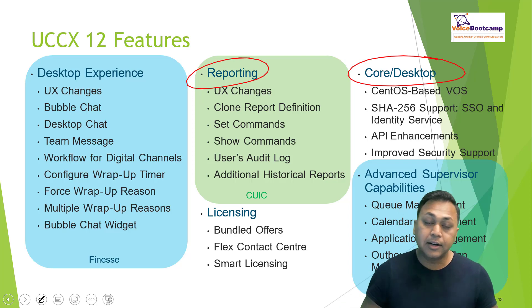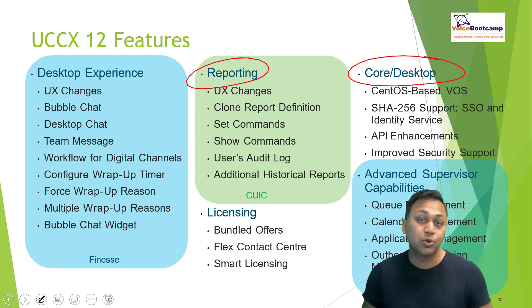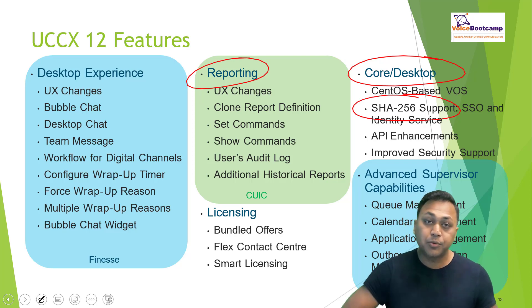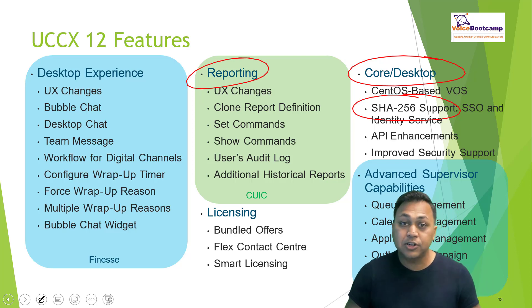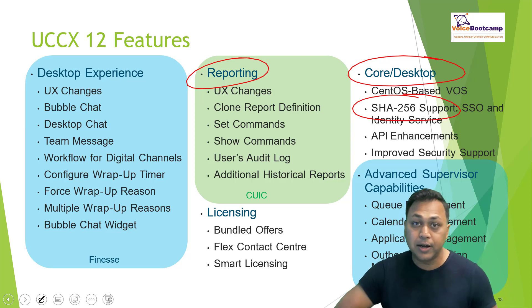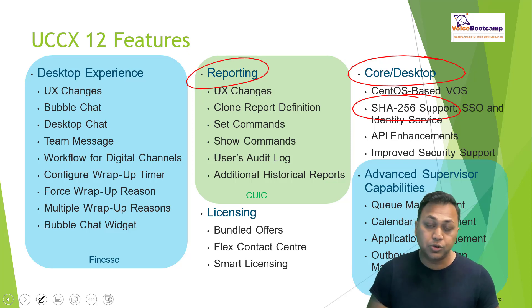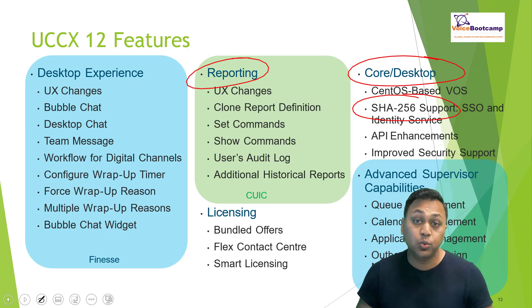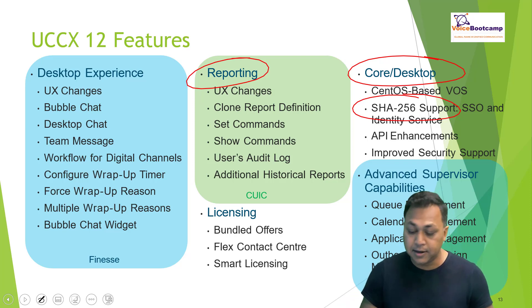The core operating system it runs on is CentOS, customized by Cisco, so you must use Cisco images to deploy it. It is highly secured with SHA-256 support, and it can provide single sign-on authentication using Microsoft Active Directory, Azure, and other options or SAML-compatible LDAP servers. It also offers extensive API access so developers can communicate with UCCX to push and pull various data.